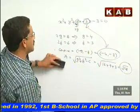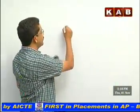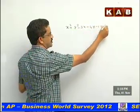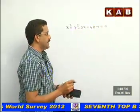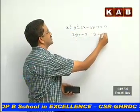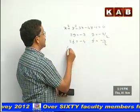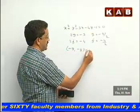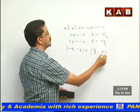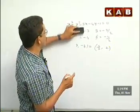Let us take one more, slightly trickier example: find the center of x² + y² − 3x − 4y − 1 = 0. Here 2g = −3, so g = −3/2; and 2f = −4, so f = −2. The center is (−g, −f) = (3/2, 2).